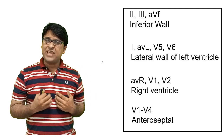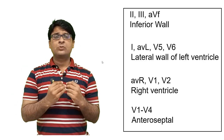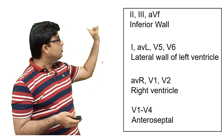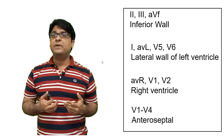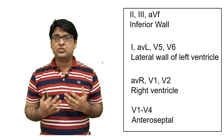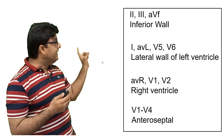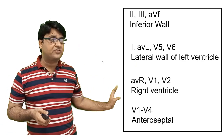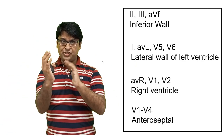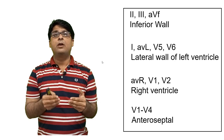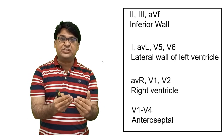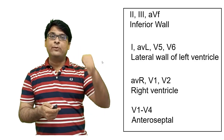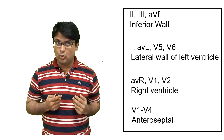Something very important you should memorize: when looking at an EKG, lead 2, lead 3, and AVF interpret the inferior wall of the heart. Lead 1, AVL, V5, and V6 represent the lateral wall of the left ventricle. AVR, V1, and V2 represent the right ventricle, and V1 to V4 represent the anterior wall. Different directions of the heart are best interpreted by looking at different leads.